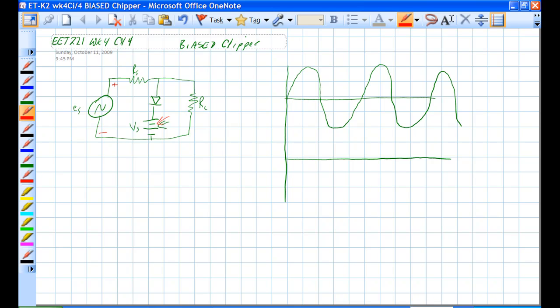When that's positive and that's negative, this guy is forward biased, but we have to overcome the .7 volts of the diode and we also have to overcome the voltage of this power supply in order to get current to go this direction.